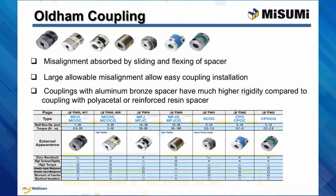One thing to keep in mind is that for couplings using resin spacers, allowable torque values and other characteristics are based on operational temperature. If operational temperature is outside the normal range of minus 20 to plus 30 degrees Celsius, allowable values like torque and speed need to be corrected using a temperature correction factor.